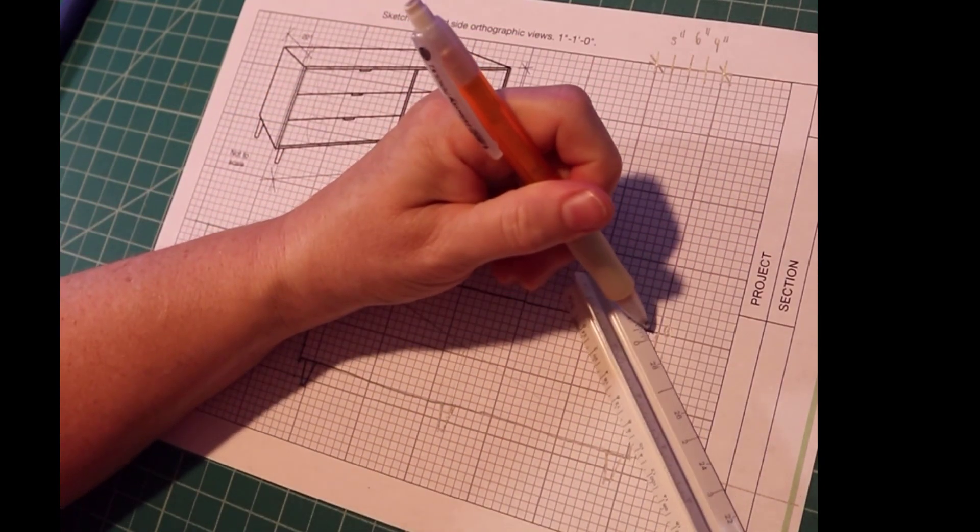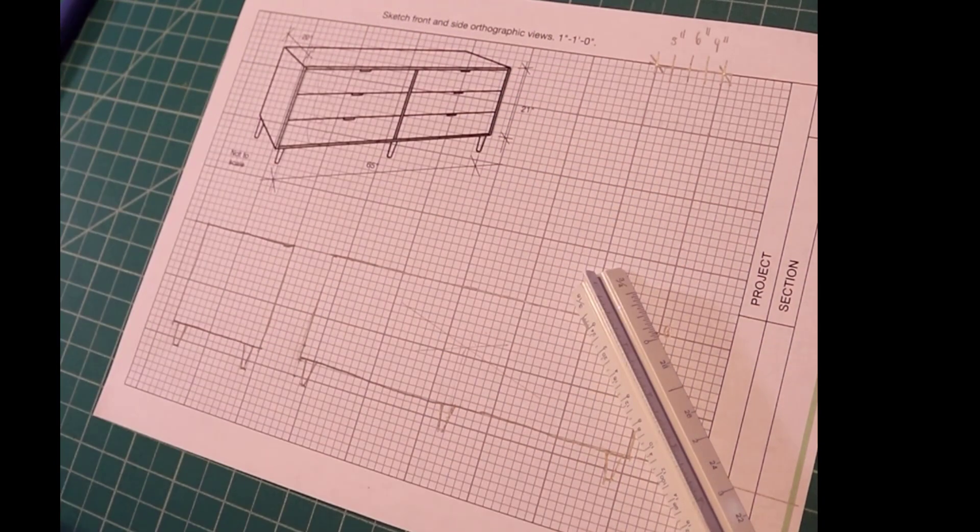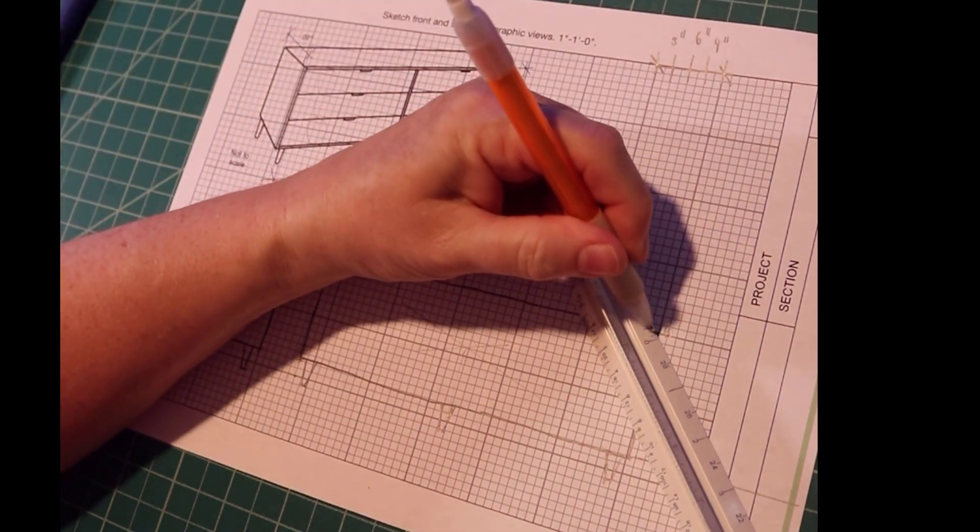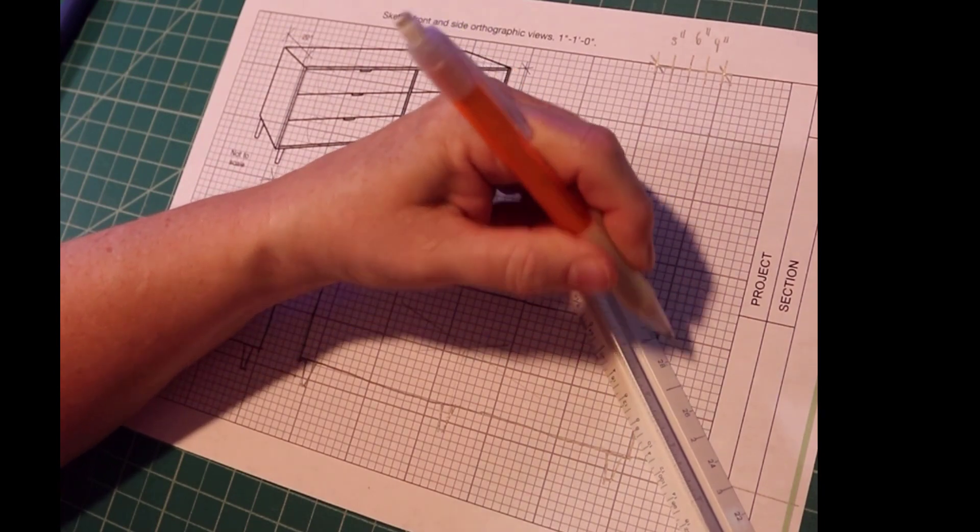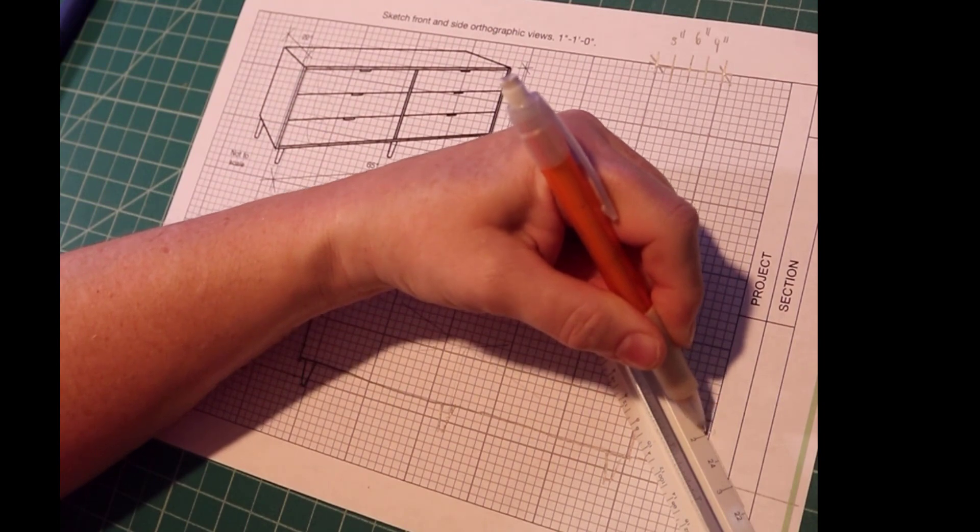I'm going to use the three-quarter scale. So 0 is here, 3 is here. Let's mark off 1 and 2.